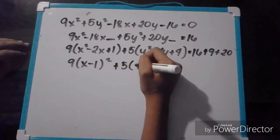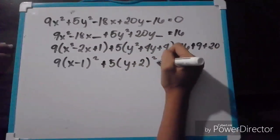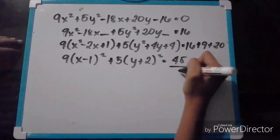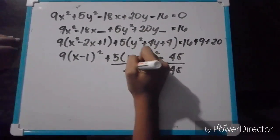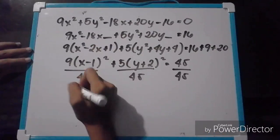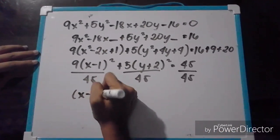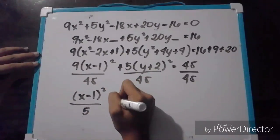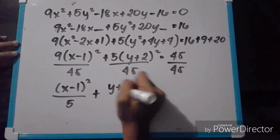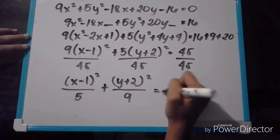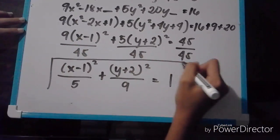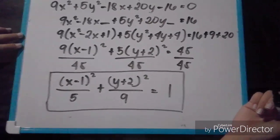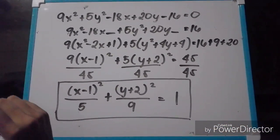Now simplify: 9 times the quantity of x minus 1 squared, plus 5 times the quantity of y plus 2 squared, is equal to 45. Since the standard equation of an ellipse must equal 1, we divide all terms by 45. That gives us the quantity of x minus 1 squared over 5, plus the quantity of y plus 2 squared over 9, is equal to 1. And that is the standard equation of 9x squared plus 5y squared minus 18x plus 20y minus 16 equals 0.